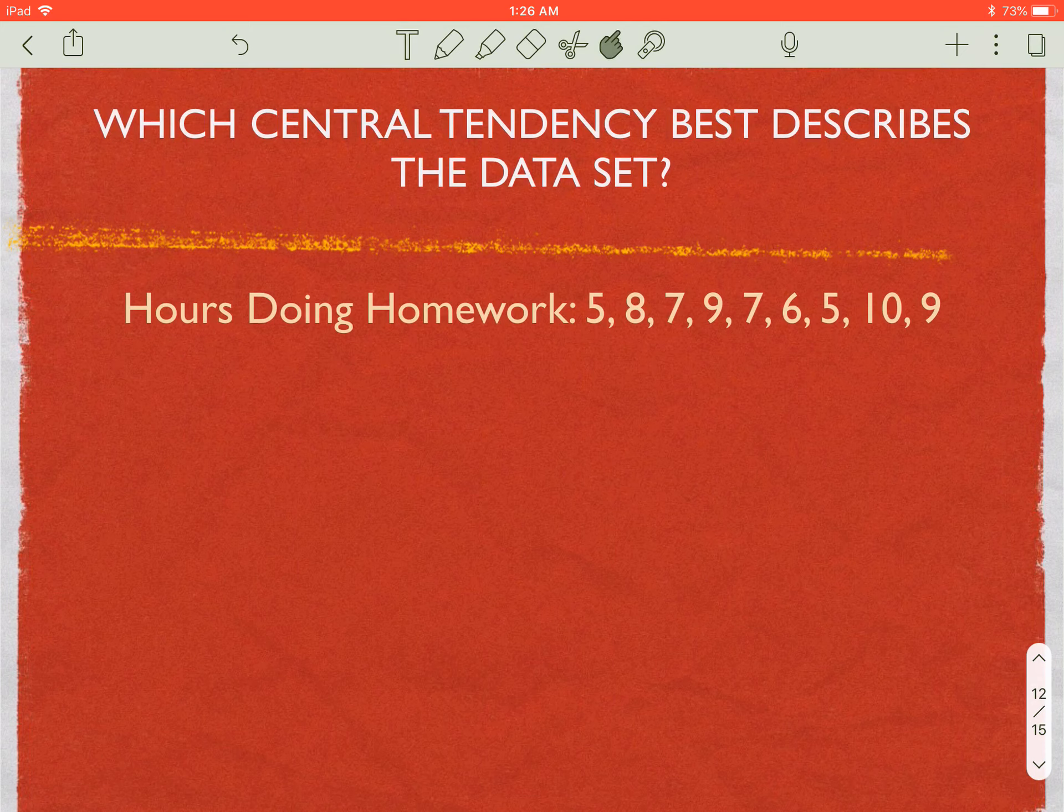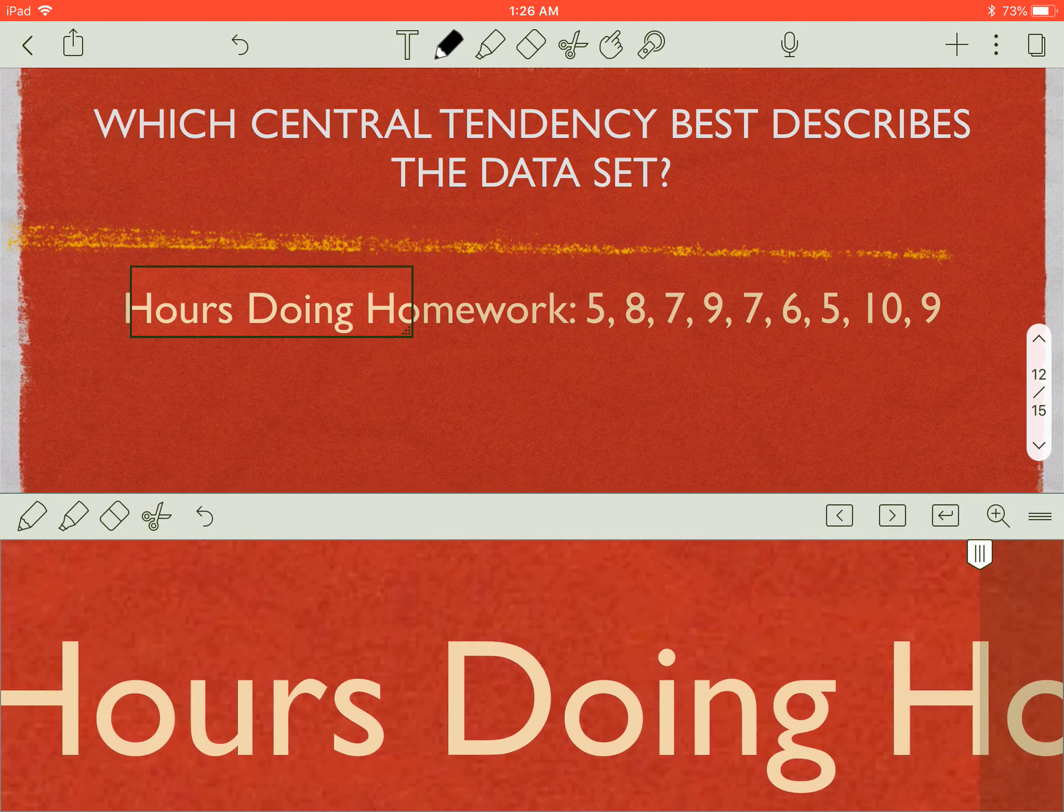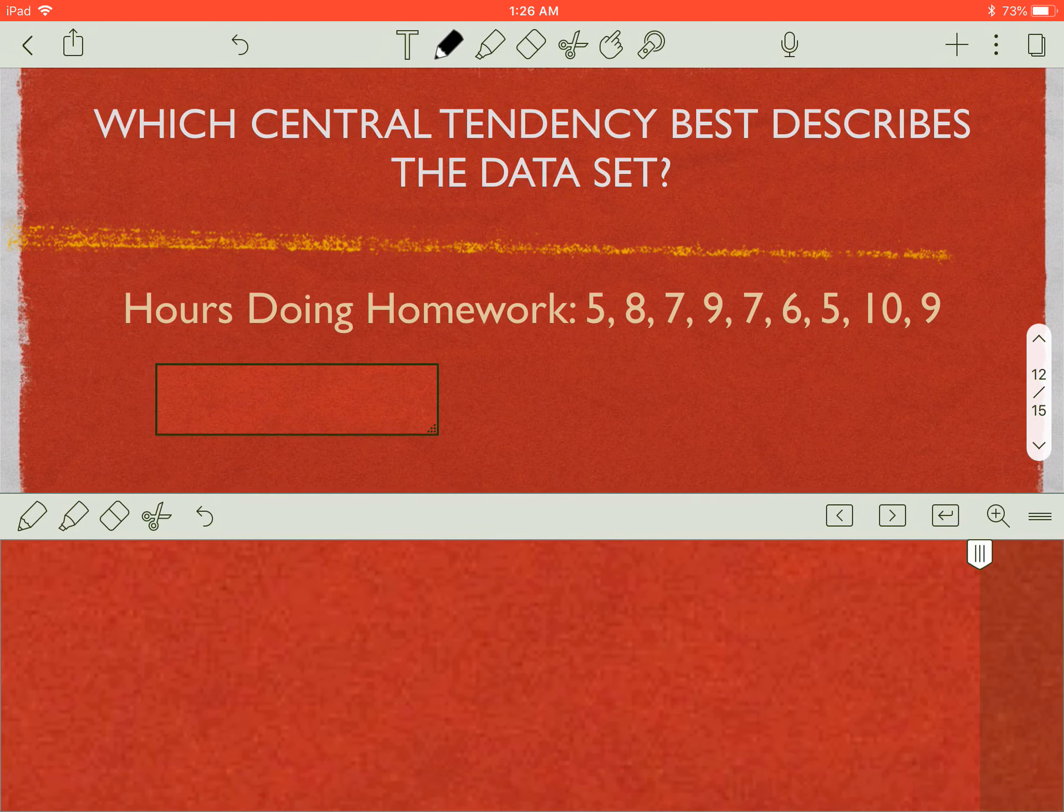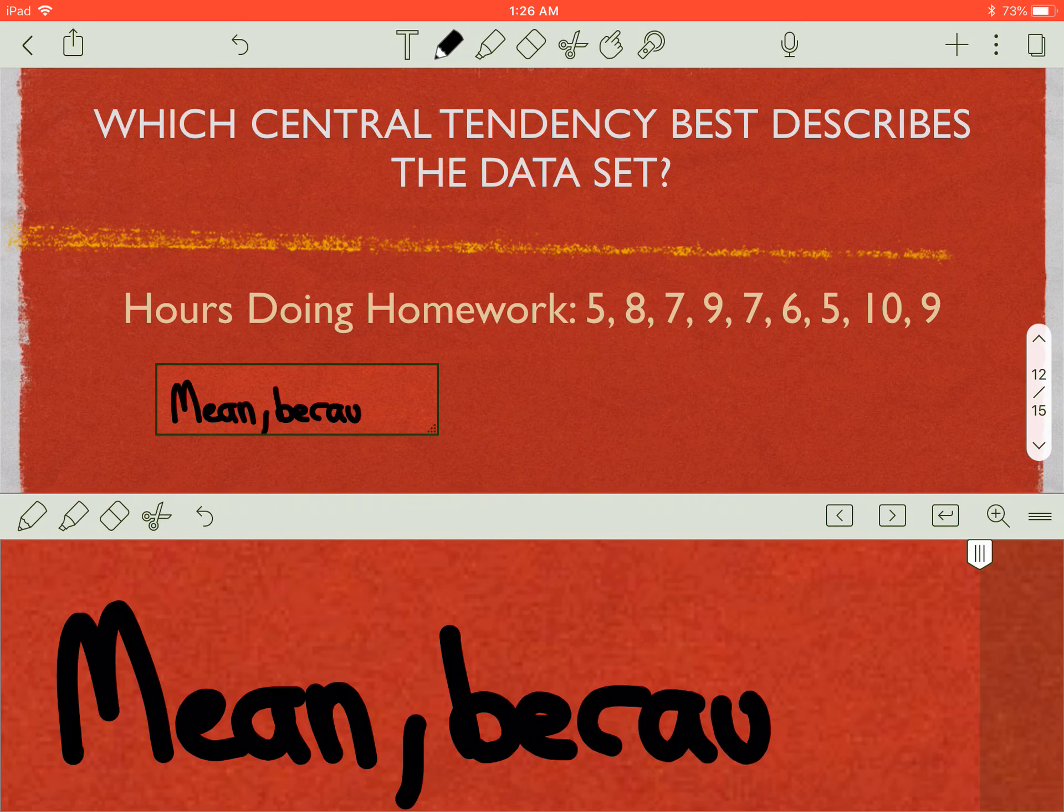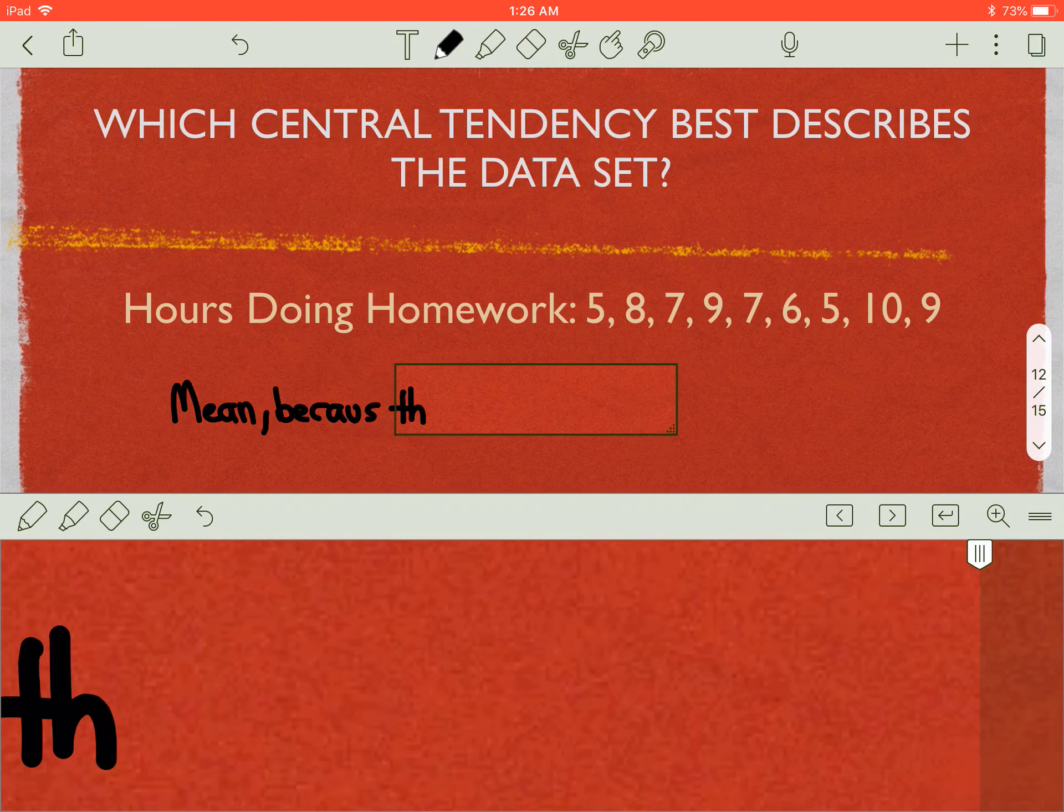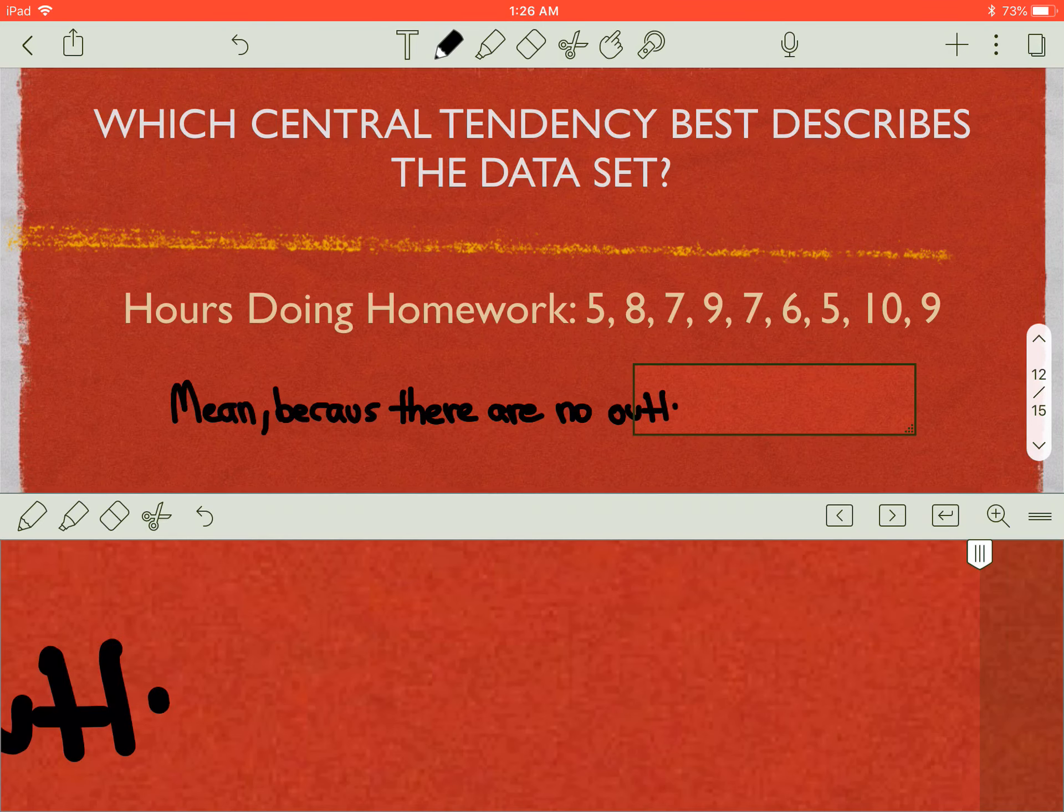Hours doing homework: 5, 8, 7, 9, 7, 6, 5, 10, 9. None of those numbers jump out. None of those numbers are significantly big or significantly small compared to the rest. So we would say this would be the mean. And why is it the mean? Because there are no outliers.